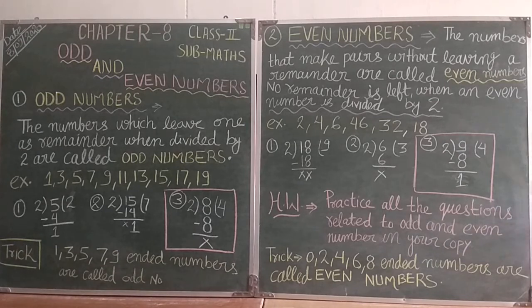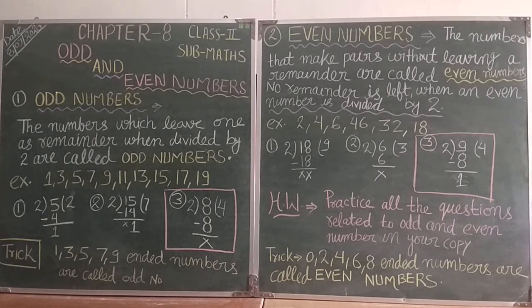Now we have a third example. That is number 9. When we divide number 9 by 2, 2 fours are 8. When we minus both numbers, 9 minus 8 equals 1. So the remainder is 1. The number 9 is an odd number.